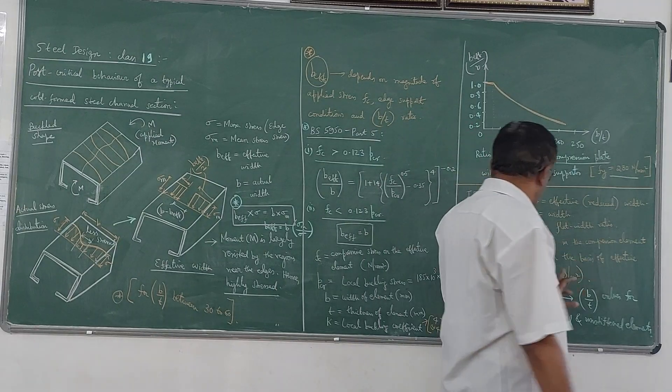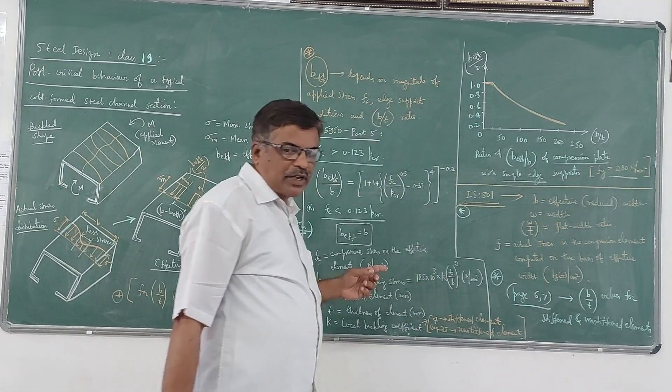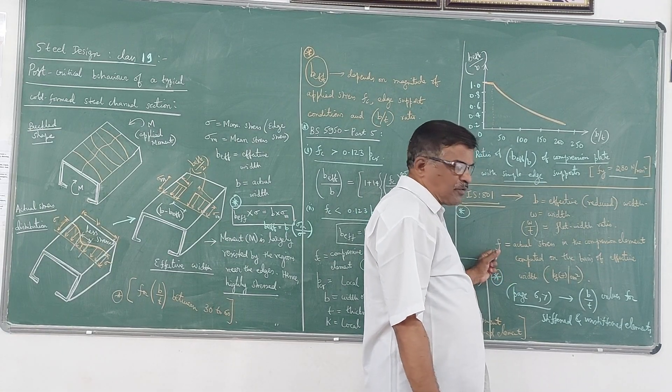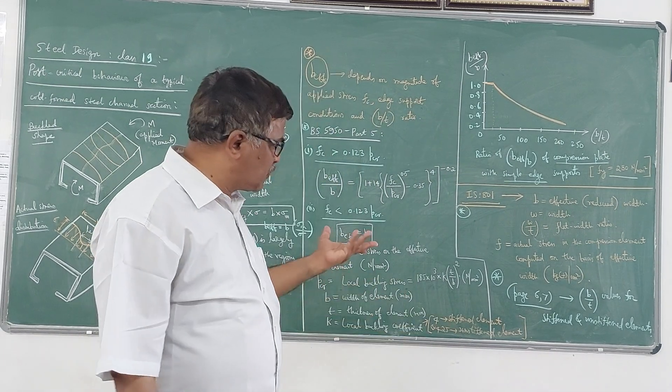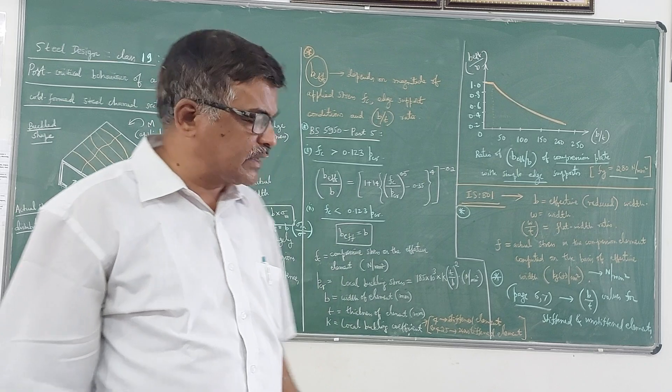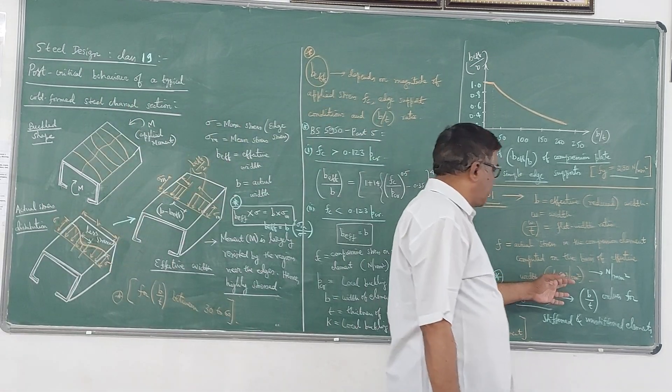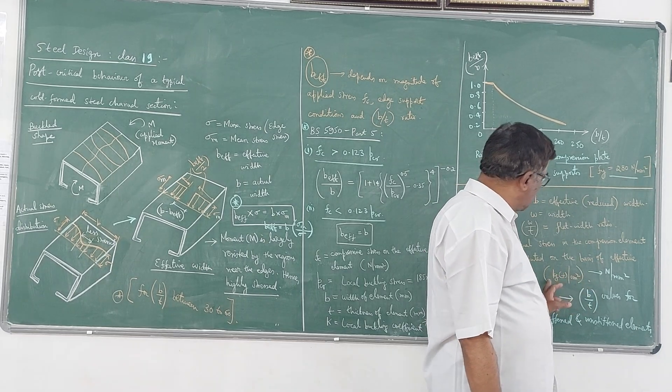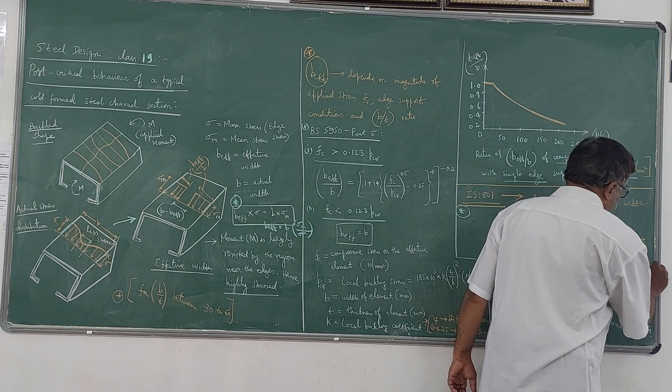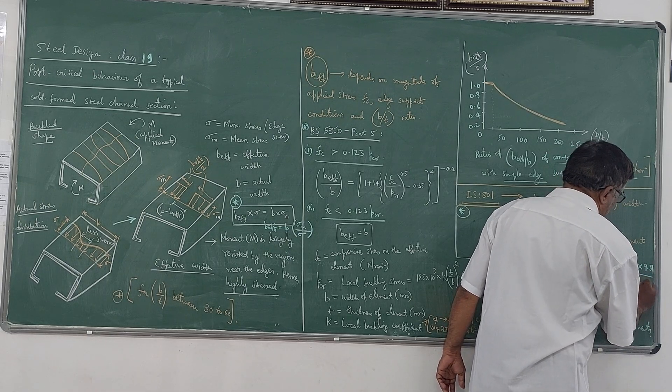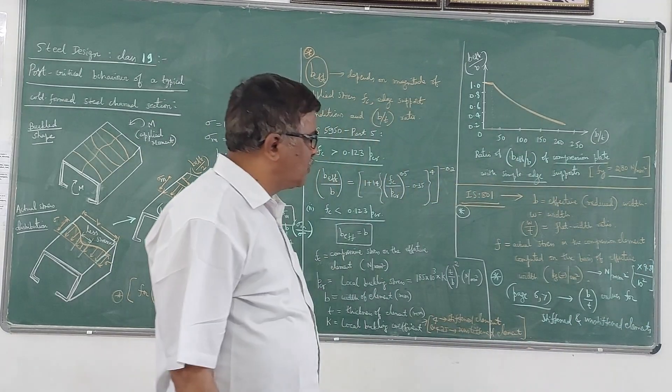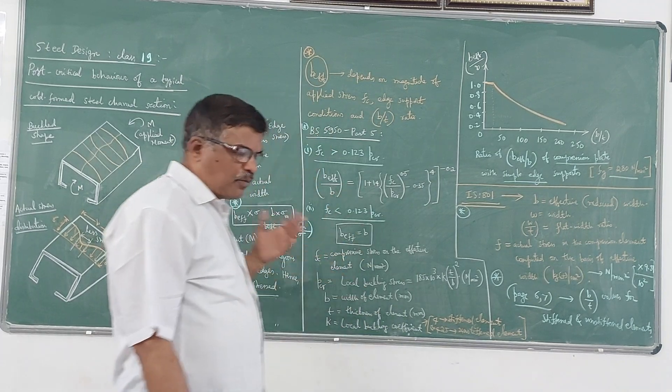And this F is the actual stress in the compression element computed on the basis of effective width. Of course here in the code, he has given the formula in terms of - of course when you use the formula you are going to get this value of F in terms of kg force per cm square. So what we have to do here is when you want to convert this kg force per centimeter square to Newton per mm square, this is the conversion factor. So you have to multiply by 9.81, and you have to divide - one centimeter is nothing but 10 mm, so therefore 10 square, so that is 100. So times 9.81 divided by 100 gives the value in Newton per mm square.